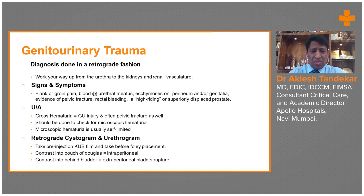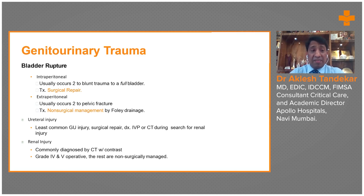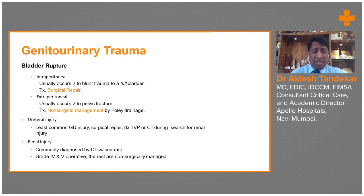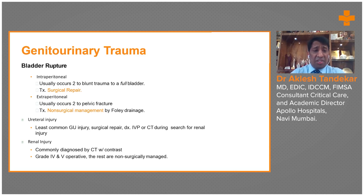A retrograde cystourethrogram should be done before placing a Foley catheter. In case of bladder rupture, blood collection will be in the intraperitoneal area and surgical repair is very important. If the bladder rupture is extraperitoneal — usually due to pelvic fracture — surgical management is done by Foley catheterization. If it is intraperitoneal bladder rupture, surgical repair is absolutely necessary. Urethral injuries are common during pelvic trauma; surgical repair or suprapubic cystostomy should be done. Associated renal injury should also be ruled out.